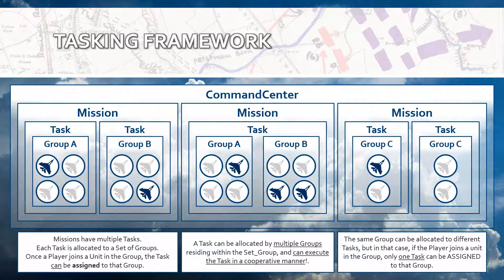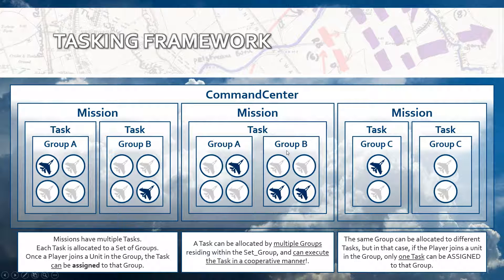When you allocate a task to a group, it means that when a player joins that group, that player can be assigned to that task. Once it is assigned, the task gets alive and will get activated. A task can be allocated by multiple groups residing within a set group — remember the set entity within Moose, the set group. So a task accepts a set of groups, which is very powerful, and a task can then be accomplished in a cooperative manner.